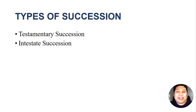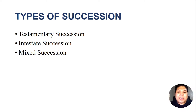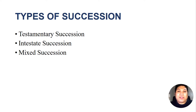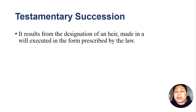There are three types of succession: number one, testamentary succession; we also have intestate succession; and mixed succession. Testamentary succession happens when the deceased left a will before he died. If he has no will, then the succession process could be intestate, meaning the operation of the law will happen. When succession is partly testamentary and partly intestate, that is called mixed succession.